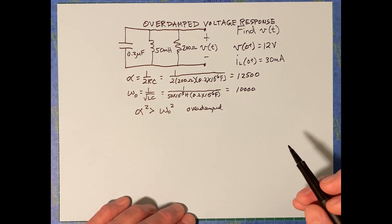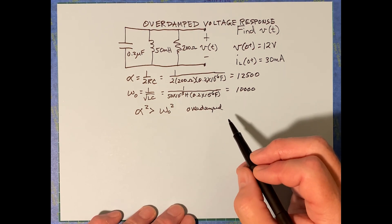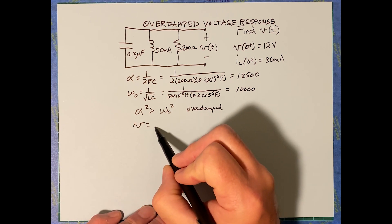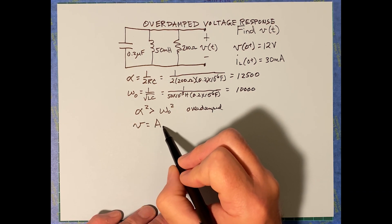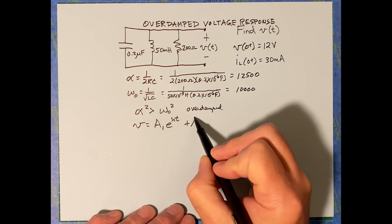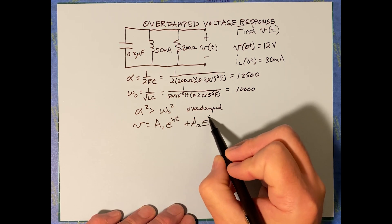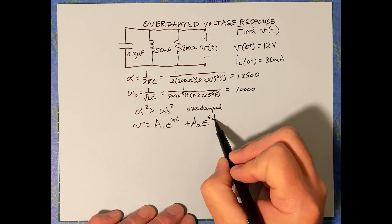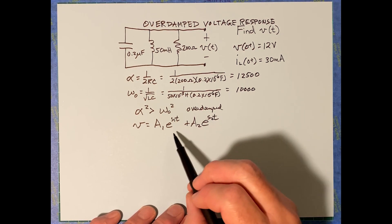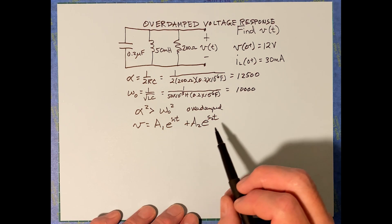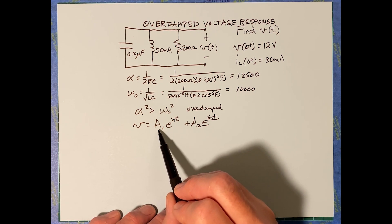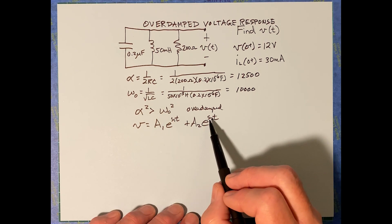Now that we've confirmed the overdamped case, the voltage response in general looks like v equals A1 times e to the s1·t plus A2 times e to the s2·t. Our goal at this point is to figure out A1, s1, A2, and s2.